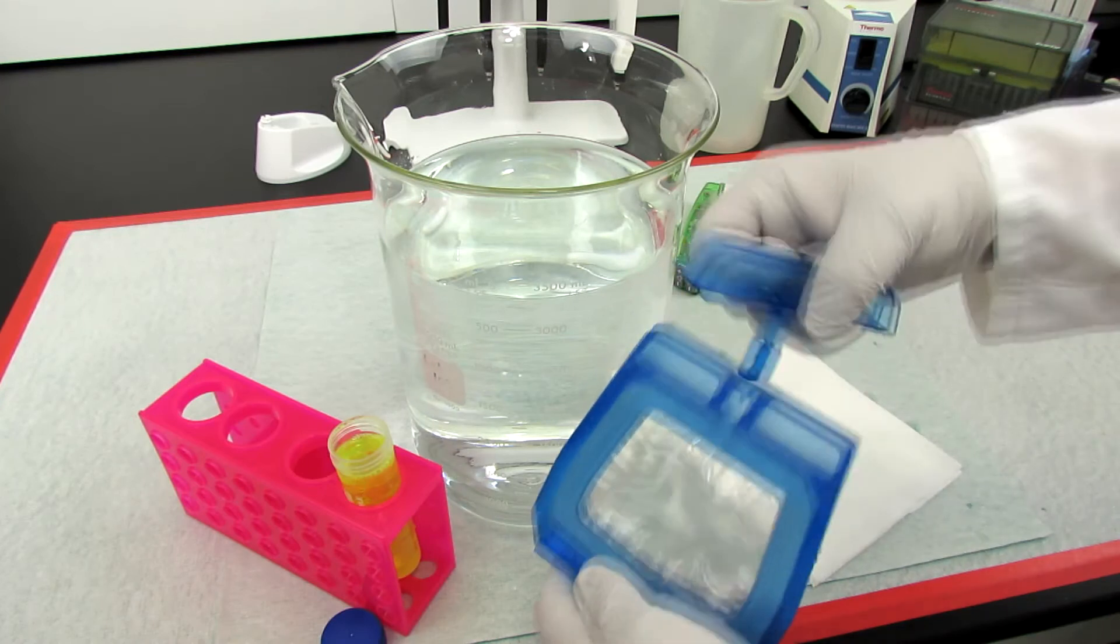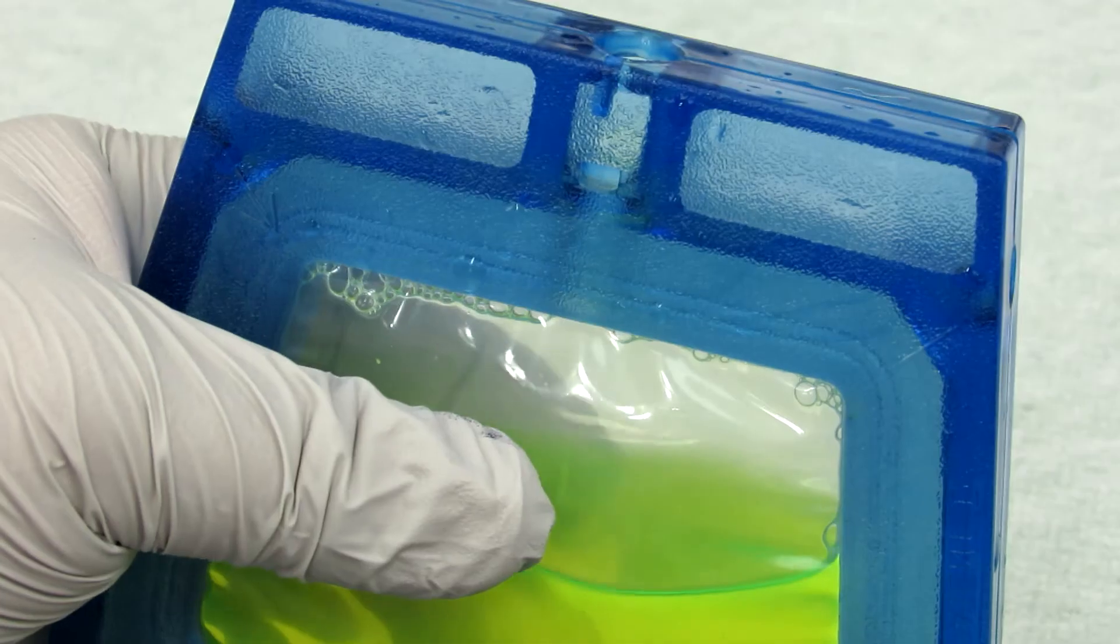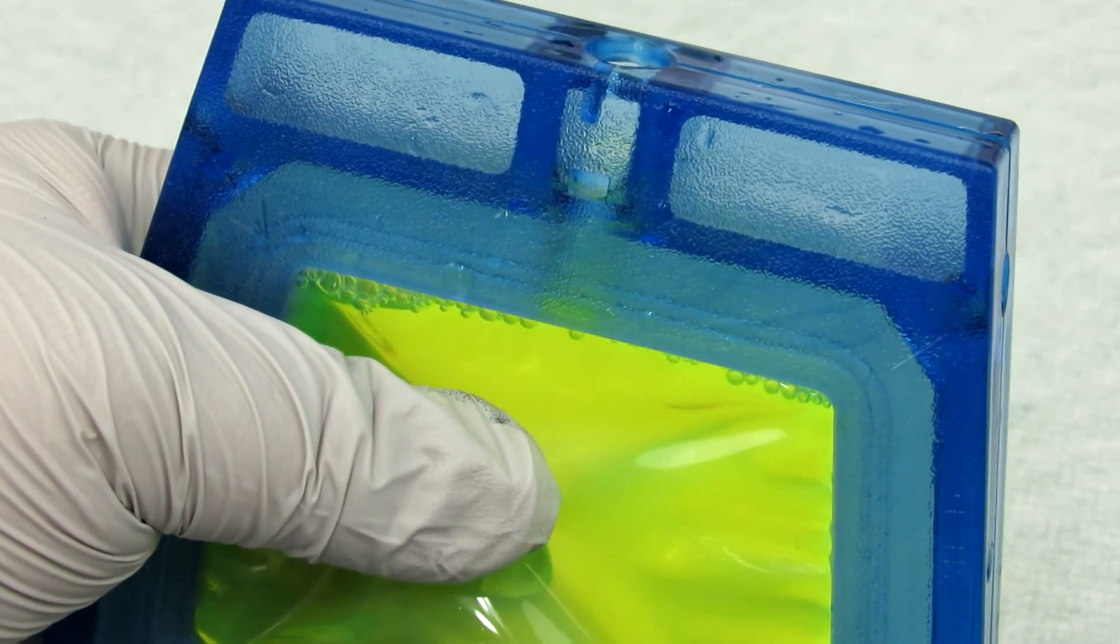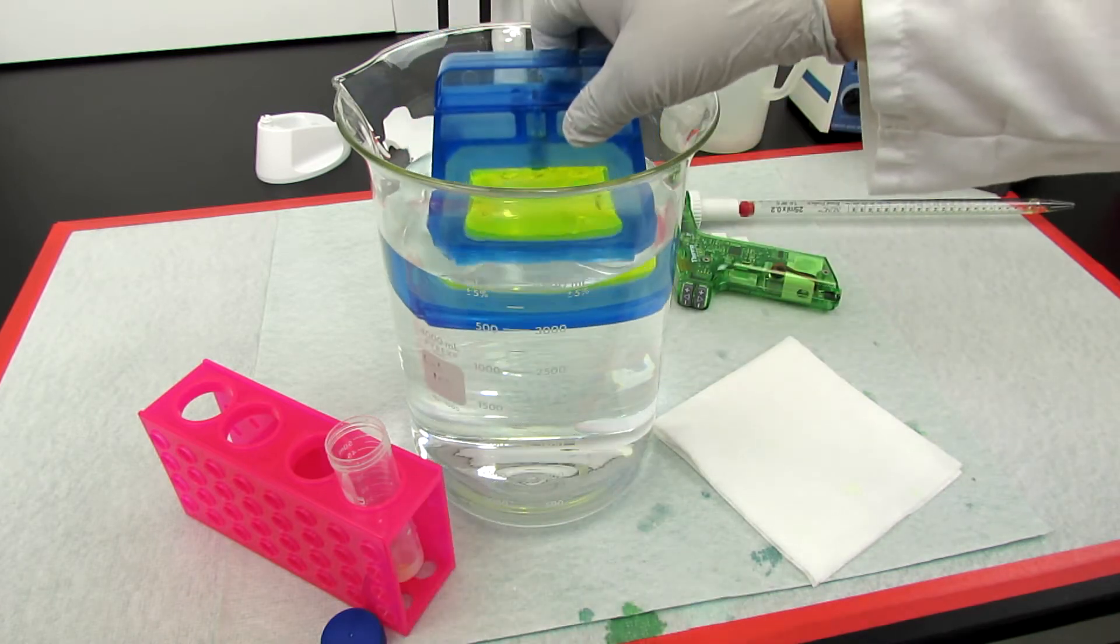Twist the cap off and pipette your sample into the cassette. Once filled, gently squeeze the membranes to remove excess air from the cassette, then cap it and submerge it in dialysis buffer.